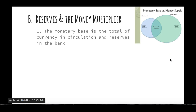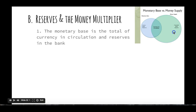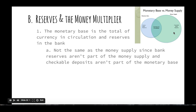Compared to the money supply, on the other hand, the money supply includes the currency in circulation as well, but it also includes checkable deposits in banks. The monetary base is actually a lot smaller than the money supply, because the money supply includes all those checkable deposits, which is a lot larger. Think about it — where do you keep most of your money, in cash or in the bank? Probably in the bank. Bank reserves aren't part of the money supply, and checkable deposits aren't part of the monetary base.